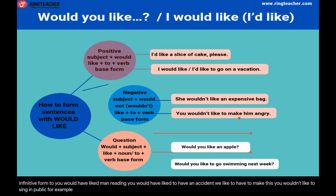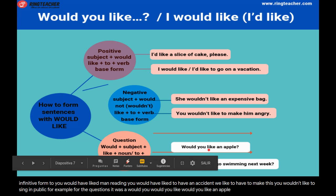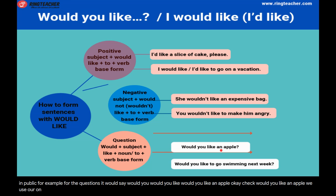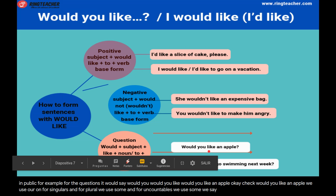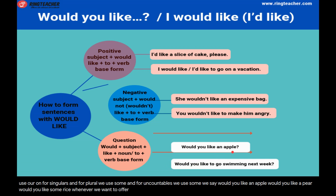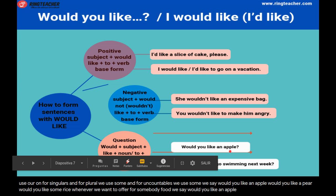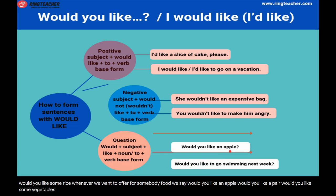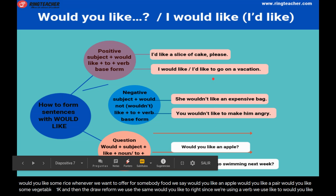For questions: 'Would you like an apple?' We use 'a/an' for singulars and 'some' for plurals and uncountables. So: 'Would you like an apple?' 'Would you like a pear?' 'Would you like some rice?' Whenever we want to offer somebody food, we use this structure. We also use 'would you like to' when inviting someone to do an action.